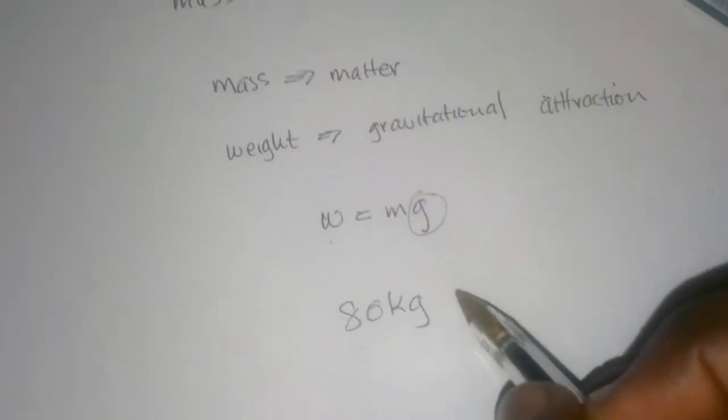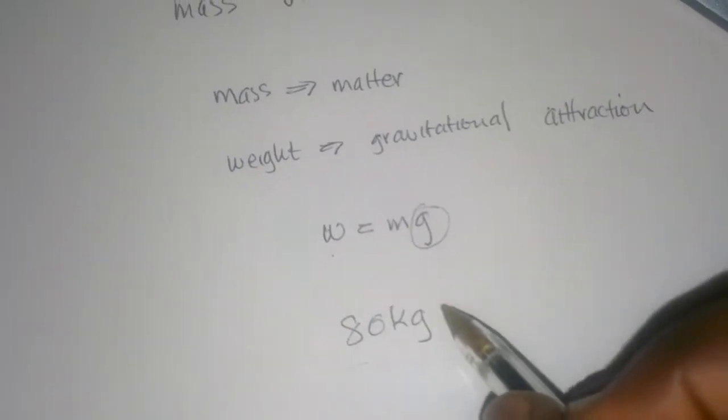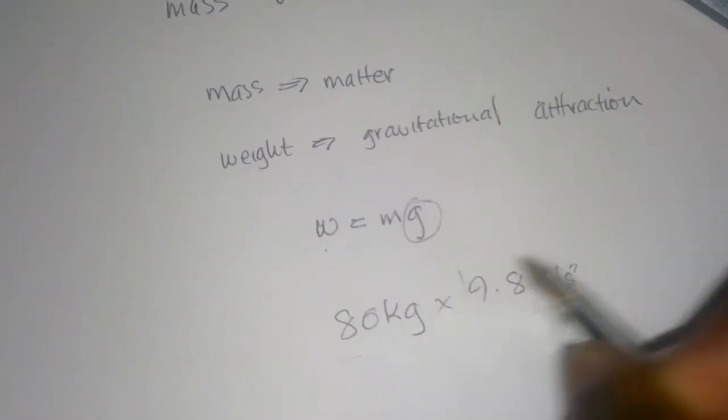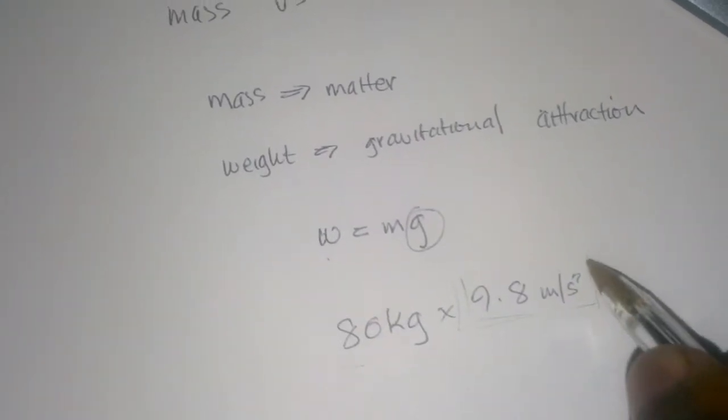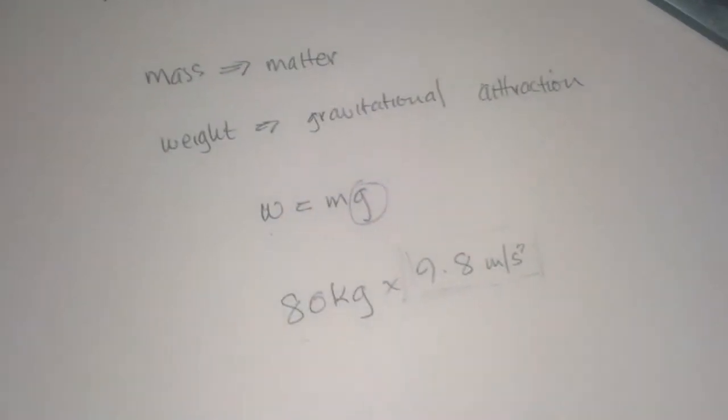We all know that the gravitational attraction on the Earth on objects is 9.8 meters per second squared. This is the acceleration that all objects have towards the center of the Earth because of the Earth's attraction.